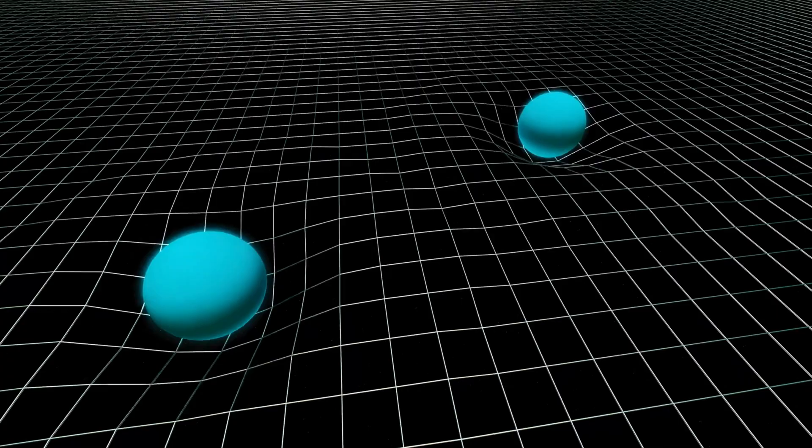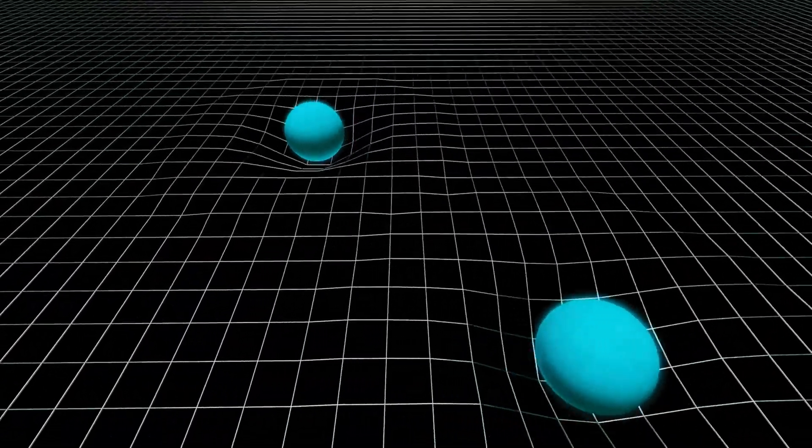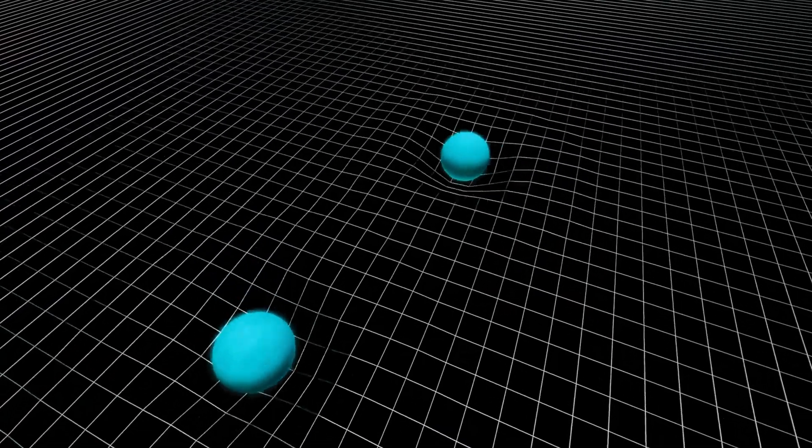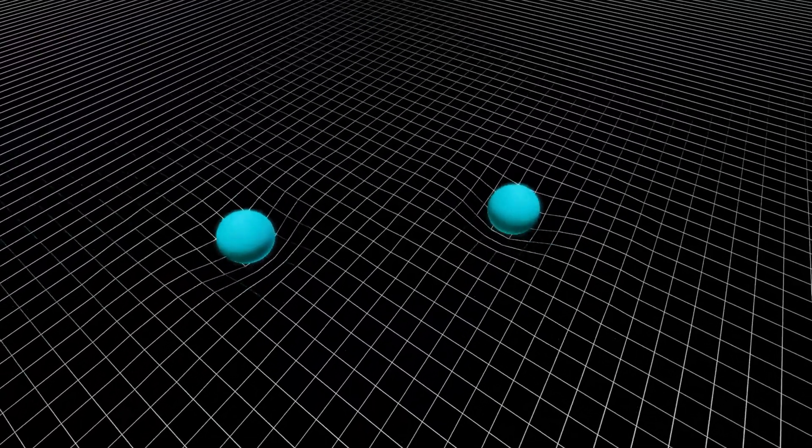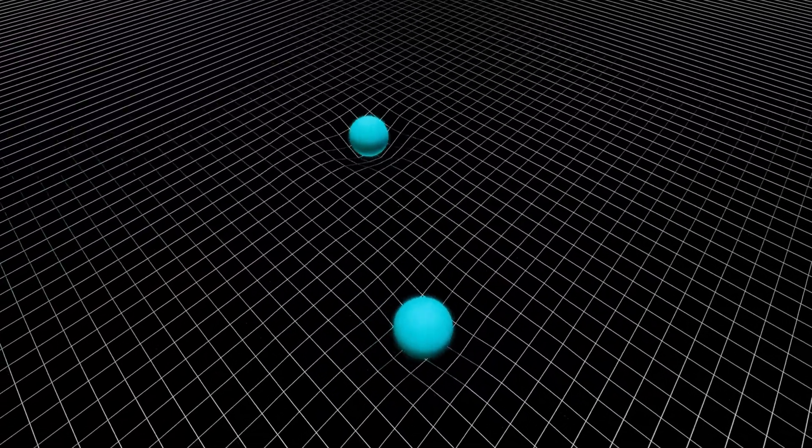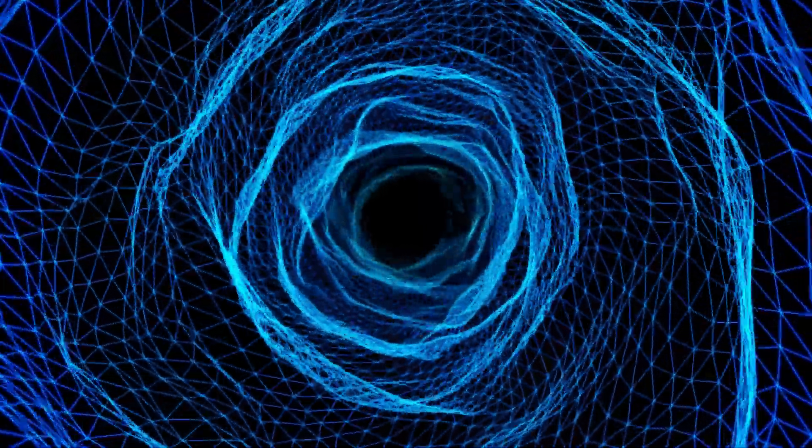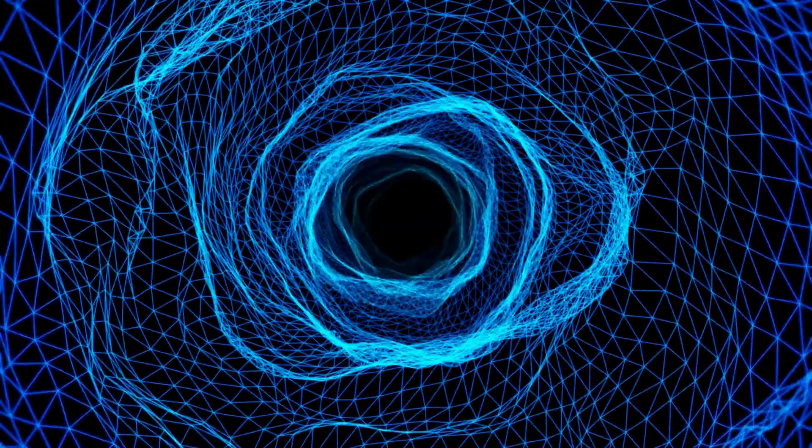However, this theoretical navigation approach presents its own challenges. Quantum entanglement is delicate and prone to disruptions. Controlling and maintaining entanglement over vast distances and through the unstable environment of a wormhole could be a formidable task.